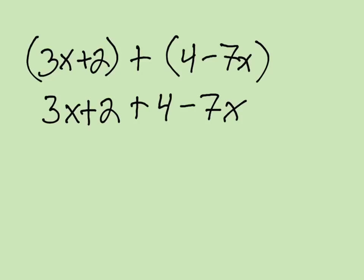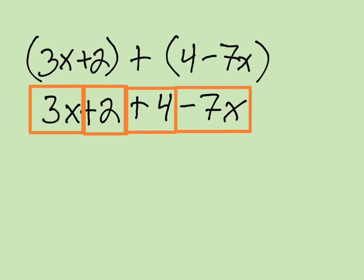Now we just need to combine those four terms. Remember, we have four terms. If it helps you, go ahead and put boxes around them. Remember, the operation goes with the number afterwards. So 3x and negative 7x are like terms, giving us minus 4x. And then the plus 2 and the plus 4 gives us plus 6. That really is all there is to adding linear expressions. Let's take a look at another example.